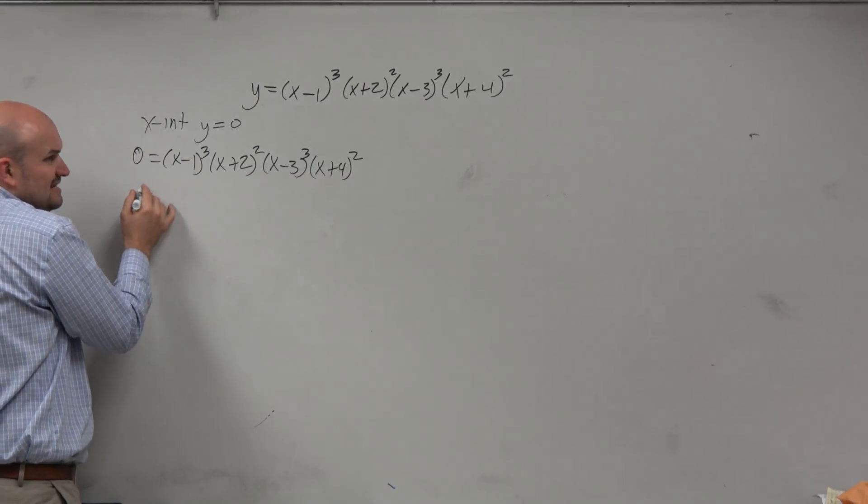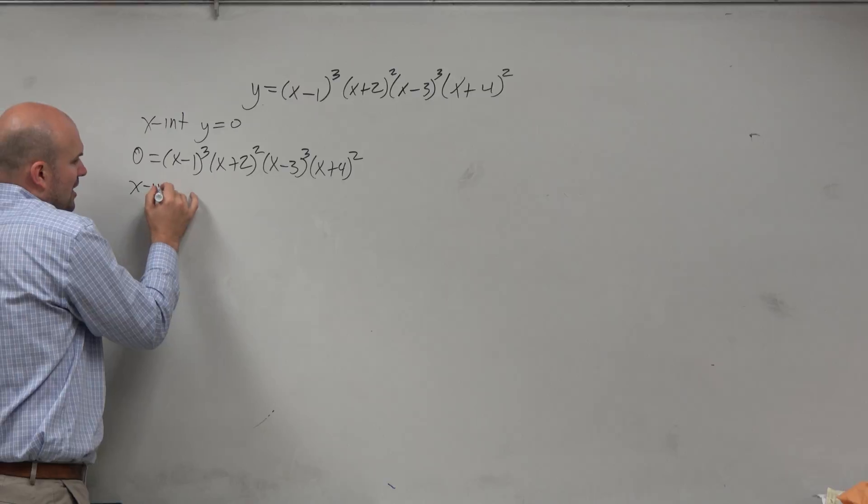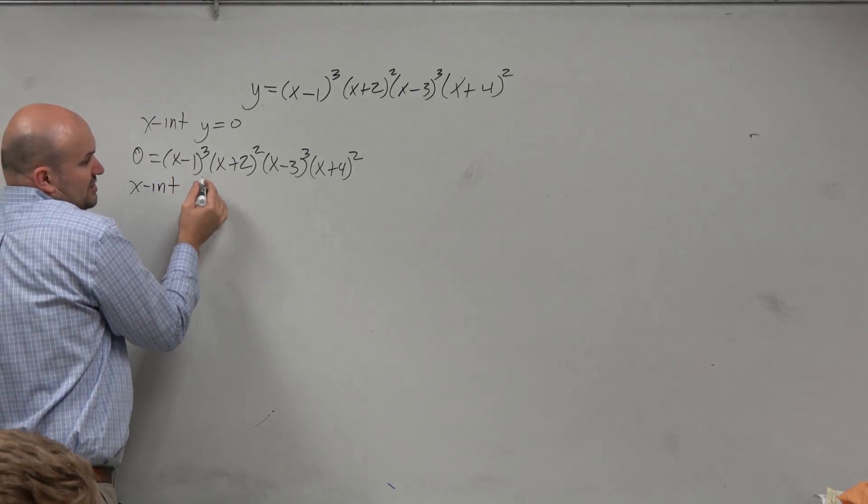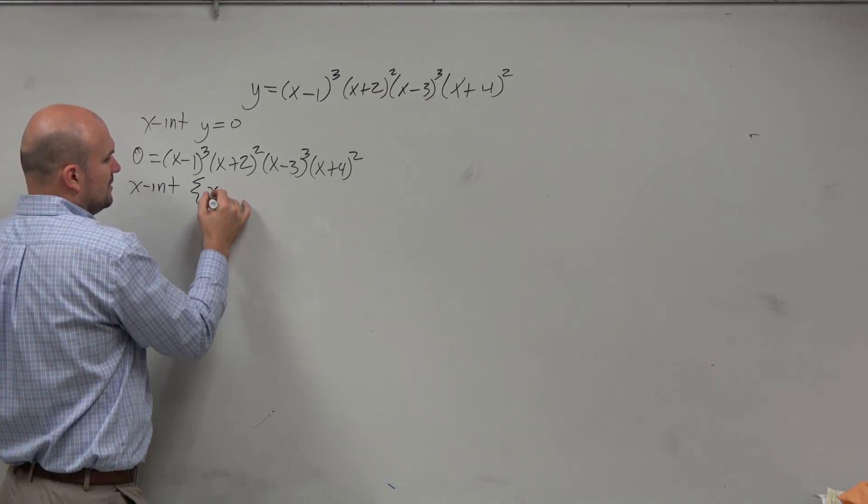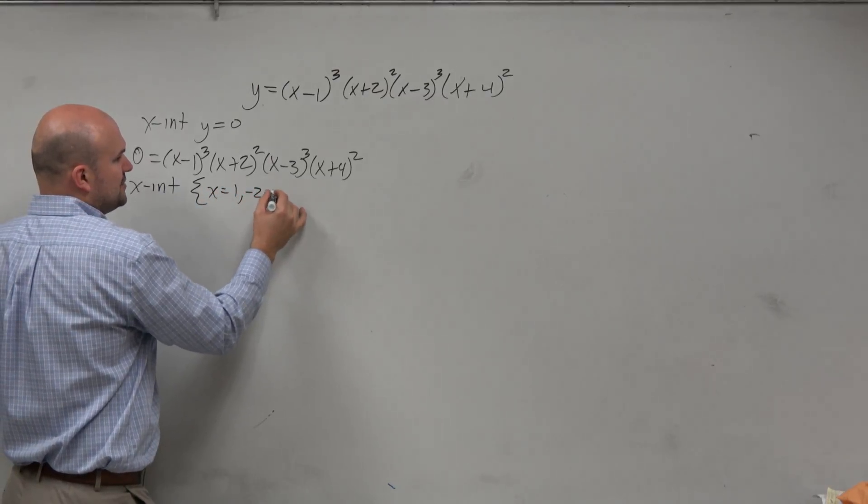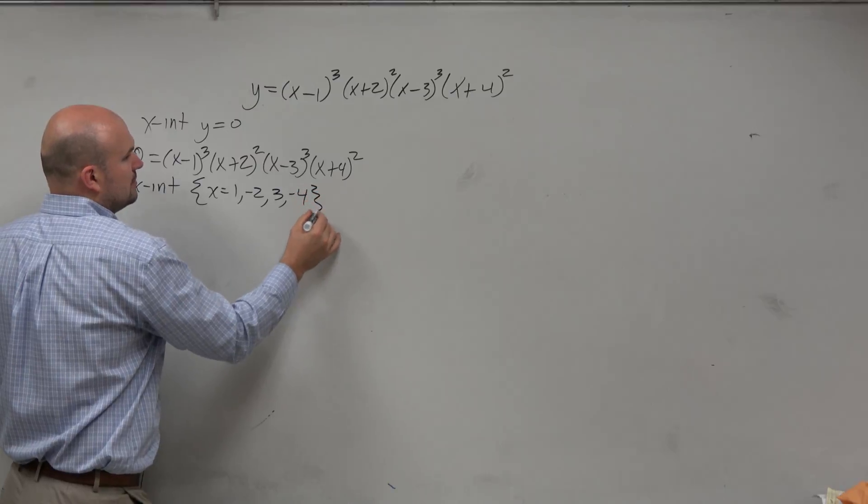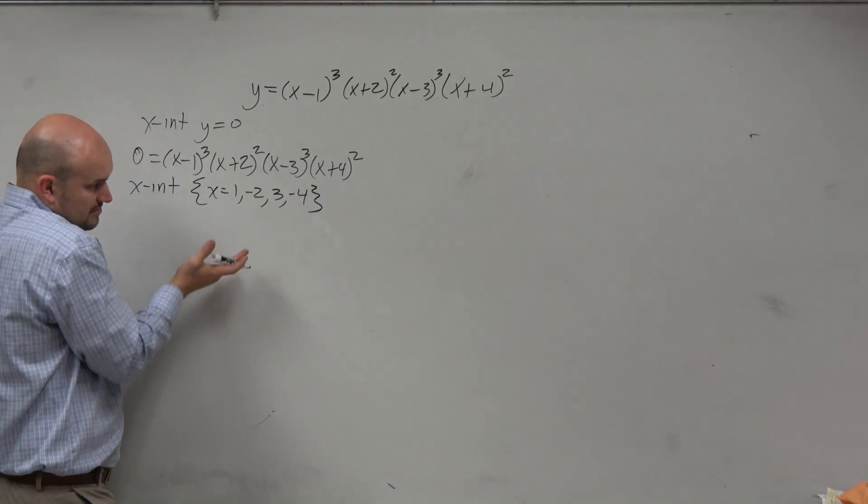So we can kind of skip those steps and just say our x-intercepts, which in this case are going to be my real zeros, are going to occur at x equals 1, negative 2, 3, and negative 4. Do you guys agree? Yes. All right.